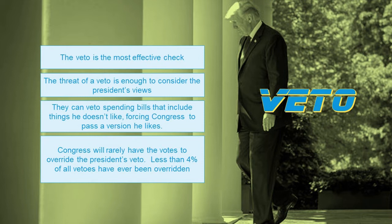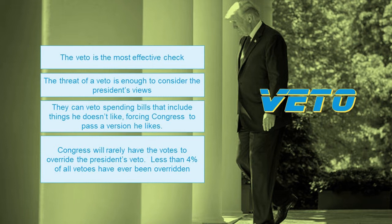The veto is considered the most effective check because even if a president just announces he's going to veto a bill, that's usually enough to make members of Congress consider what the president thinks. Congress controls the budget, but the president has the opportunity to veto it. If the president announces plans to veto a spending bill over items he dislikes, Congress is compelled to create a more reasonable budget. Congress is rarely going to have enough votes to override the veto — it takes two-thirds of all congressmen, and one party is not usually going to have a majority that large.